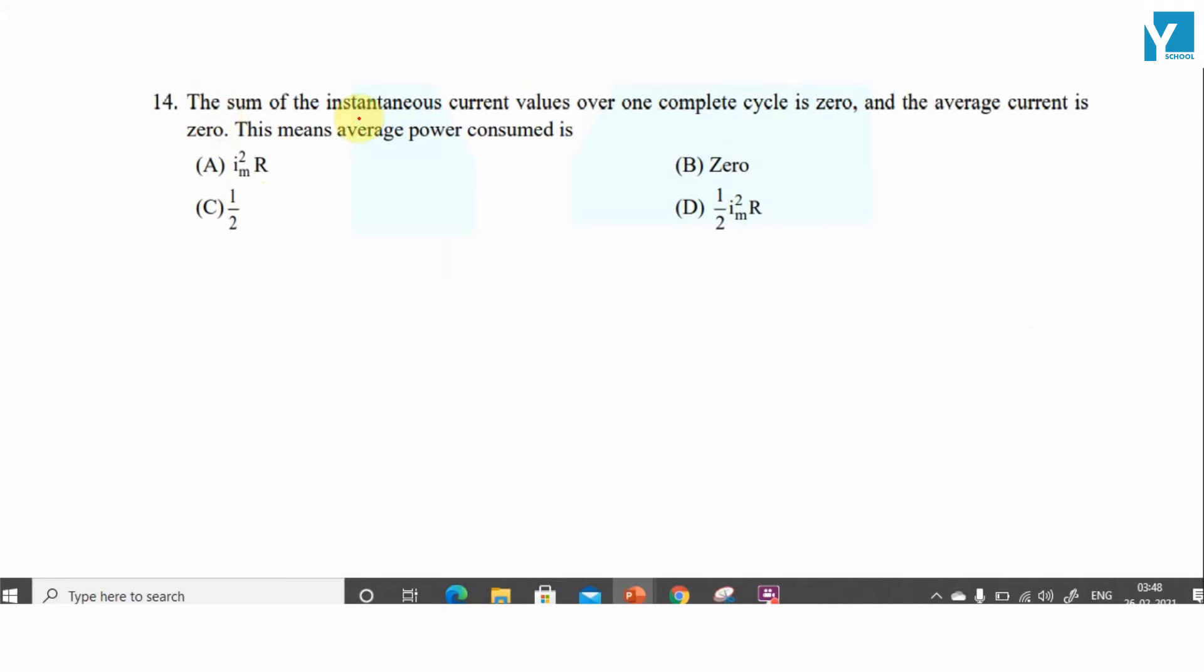The question is: the sum of the instantaneous current values over one complete cycle is zero, and the average current is zero. This means average power consumed is... In this question, the current over one complete cycle is zero, so we have to calculate the value of average power.